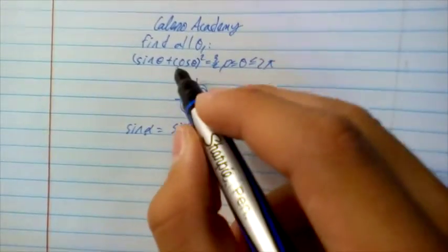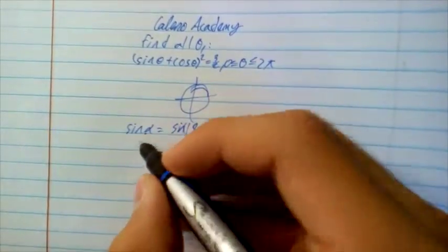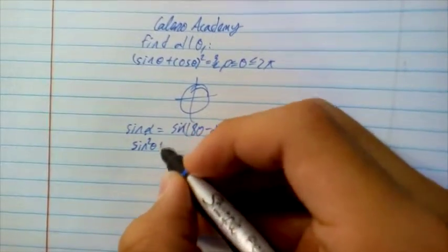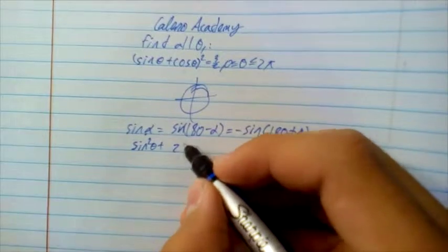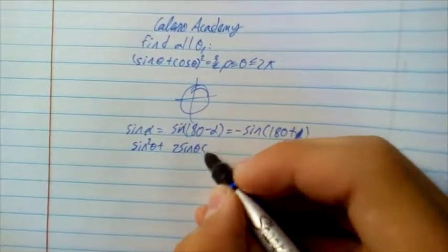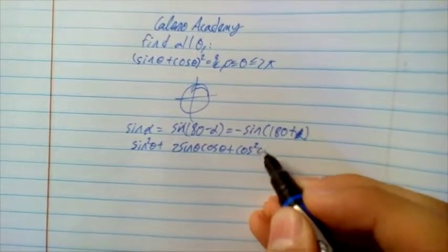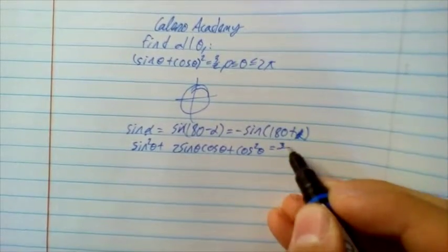Let's evaluate the left hand side of this thing over here, and we get that sin squared theta plus 2 sin theta times cos theta plus cos squared theta is equal to 3/2.